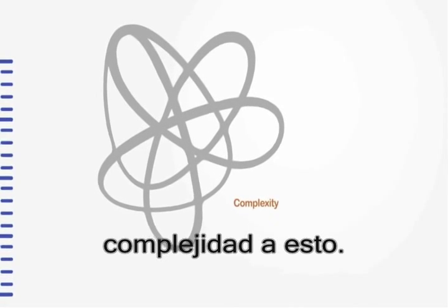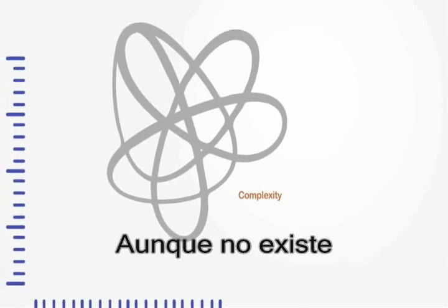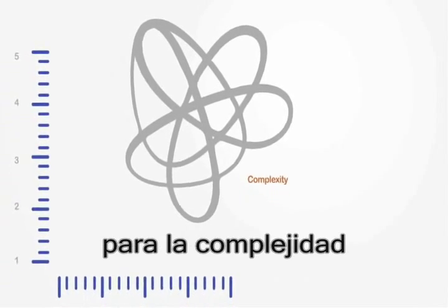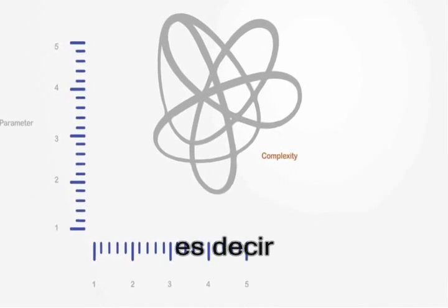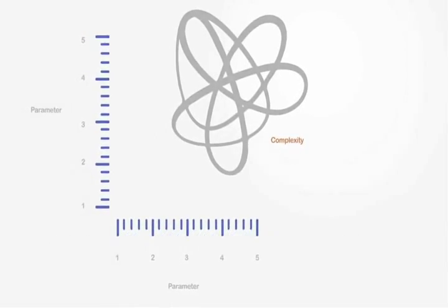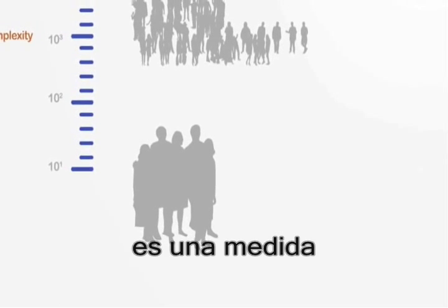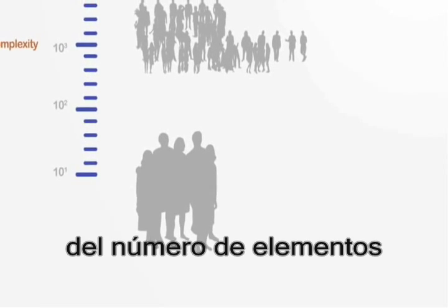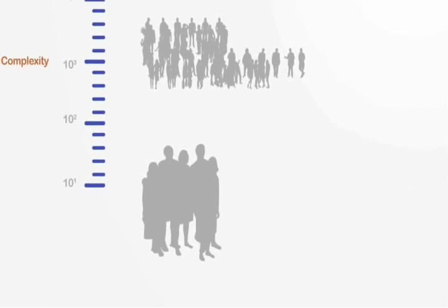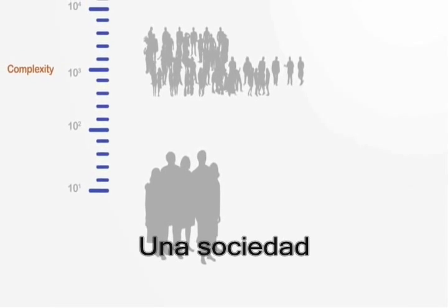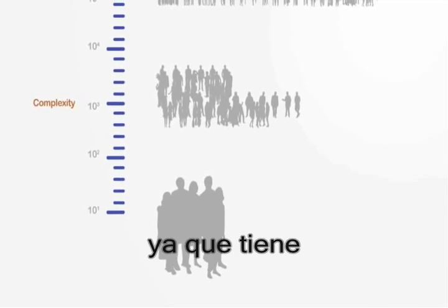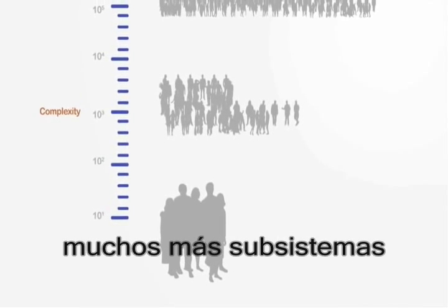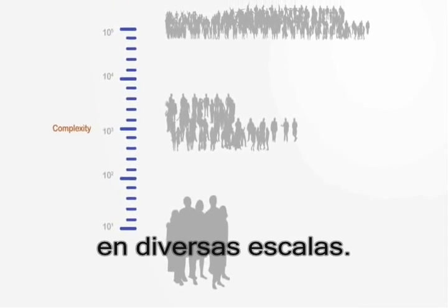Now, let's add complexity to this. Although there is no formal definition for it, we can understand complexity as a parameter — that is to say, it is a measurement of something. Firstly, it is a measurement of the number of elements within our system. A society is more complex than a small group of friends, as it has many more subsystems and elements interacting on various scales.